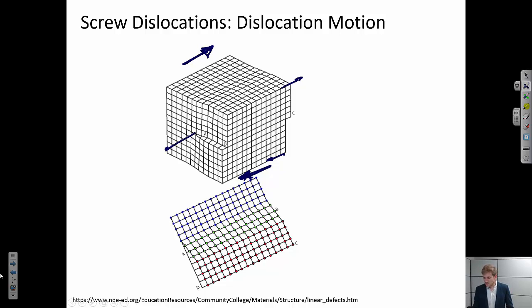So if I have my dislocation here, I can see that right side I've already been offset by one unit cell. And so if this dislocation moves one unit cell to the left, then I've now offset a little bit more of the volume.